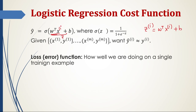This will be the prediction for the i-th example, where z_i is given as 1 over 1 plus e to the power of minus z. We are given a training set of m training examples from 1 to m, and we want the prediction for the i-th training example to be very close to the actual label value of y.